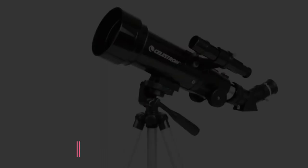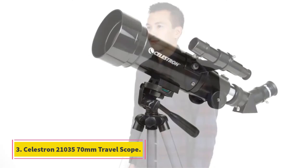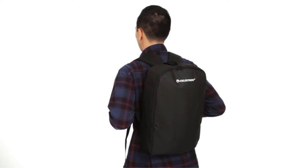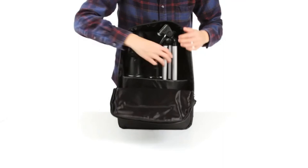At number three: Celestron 21035 70mm Travel Scope. Celestron Travel Scope is not only easy to use but has excellent specifications as well. If you're looking to buy a telescope for your young kid in order to take his hobby of astronomy further, this is the one which you should definitely think about.